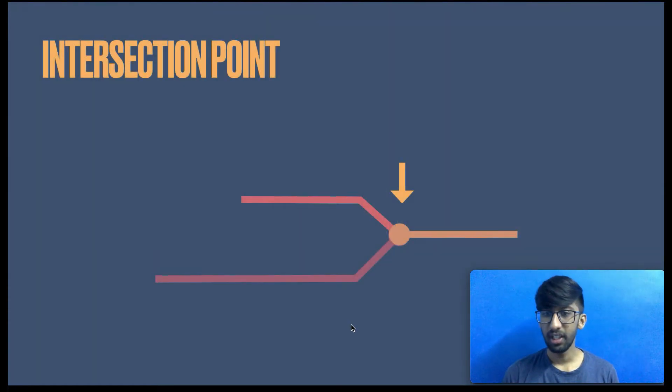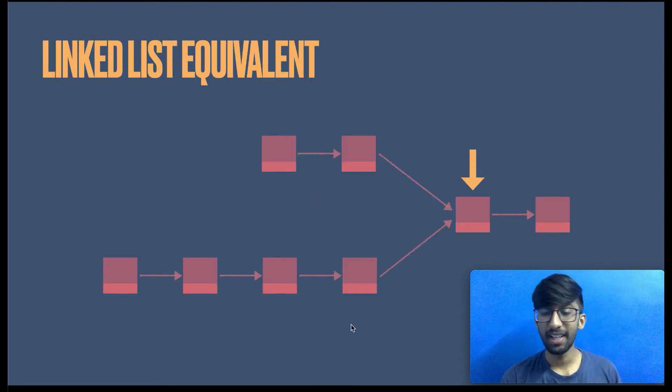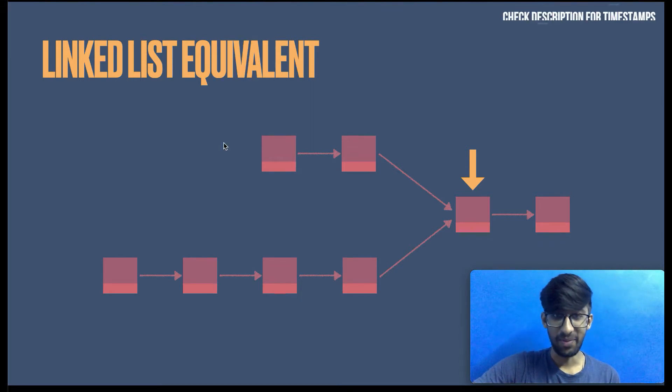What is an intersection point? The point where two linked lists merge and move as one. From here on, we are going to schematically represent it using this format. But in actuality, it might look something like this, where two different linked lists, that is two different heads, merge together and have the same tail. I made it seem very weird, but it is a very powerful question where you will have to find the intersection point of two linked lists, if they intersect at all.